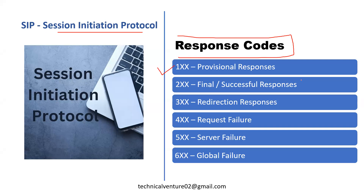In the upcoming lecture, I'm going to discuss 2xx and 3xx redirection responses in one lecture. Then I'm going to discuss 4xx request failure responses. This will be divided into three parts because we have around 25 to 30 responses in 4xx. Then we have 5xx server failure and global failure, which I'll combine in one video.